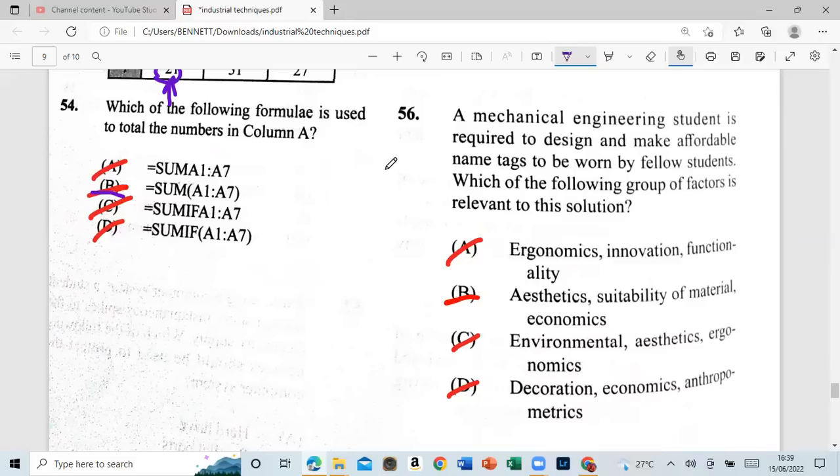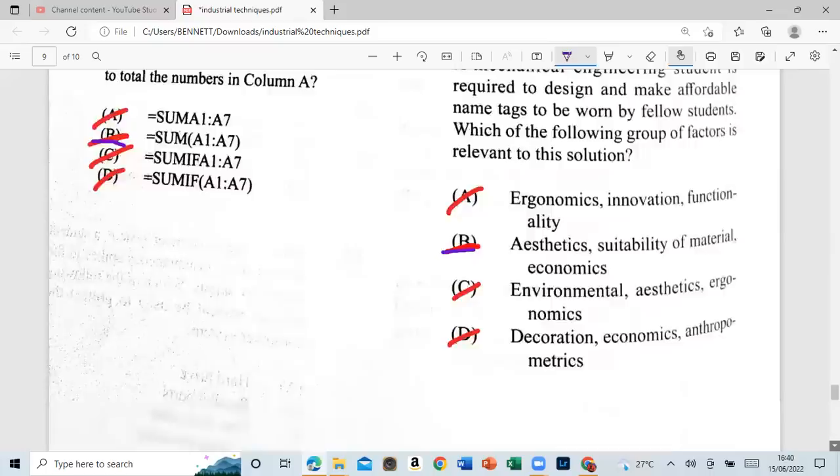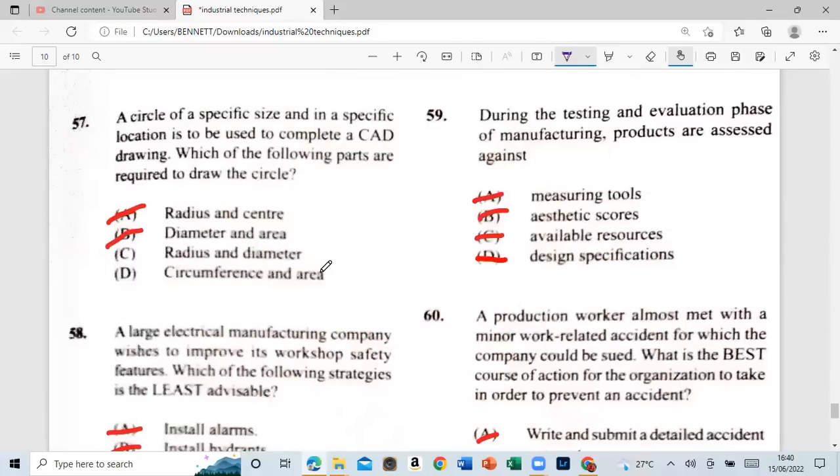All right, so that would be. Let's move on to six. A mechanical. Let me see you guys. I want you guys to see everything. A mechanical engineering student is required to design and make affordable impacts to be won by fellow students. Which are the following groups of factors is ready? We want to do this solution. A: ergonomics, innovation, functionality. B: aesthetic, suitability of material, economics. C: environmental aesthetics, ergonomics. How is it D: decoration, economics, and intro of metrics. Let me consider that a few things. And that is D. Anthropometrics. Anthropometrics. All right, so hit the like button. You can't generate me. Let me put in the workplace. Let me put in the work. Let me put in the work. Let me put in my command, guys. Let's go. Let's go.